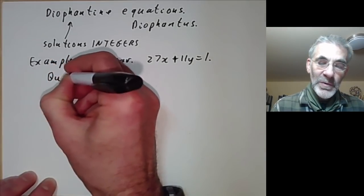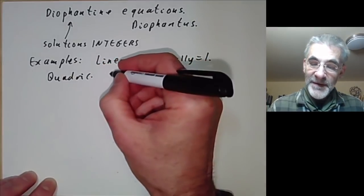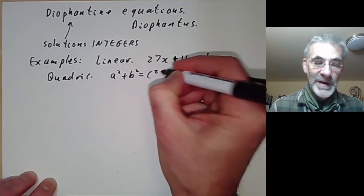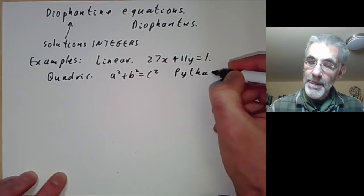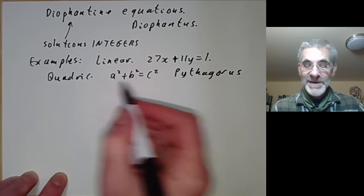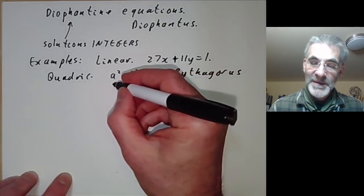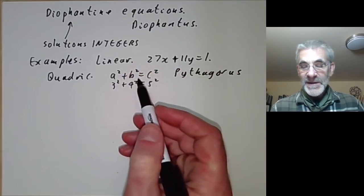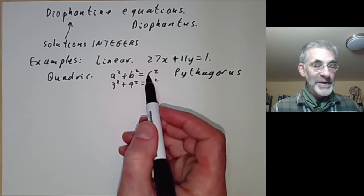For quadratic Diophantine equations, there's the very famous one: a squared plus b squared equals c squared. Pythagoras showed that if a, b, and c satisfy this they form a right-angled triangle. The famous example is 3 squared plus 4 squared equals 5 squared. The problem is to classify all solutions of this equation.